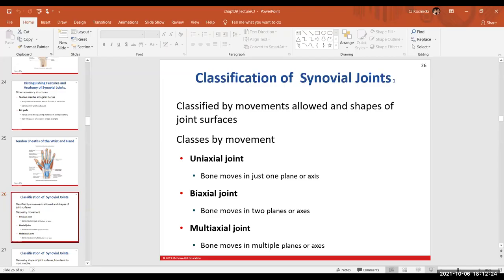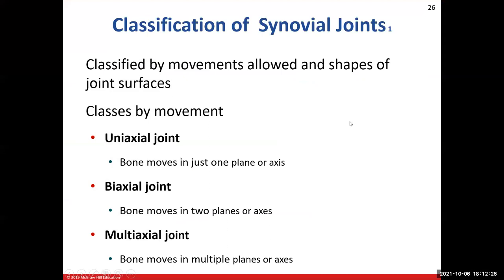In chapter nine, we are going to get into the classification processes for synovial joints. Synovial joints have a joint cavity filled with fluid, surrounded by a capsule. They fall under the functional classification of a diarthrosis — highly mobile or movable joints.